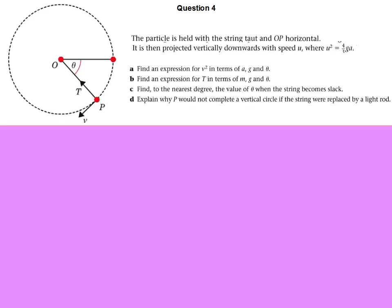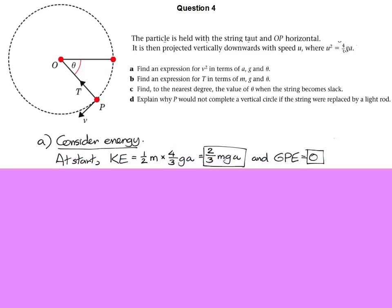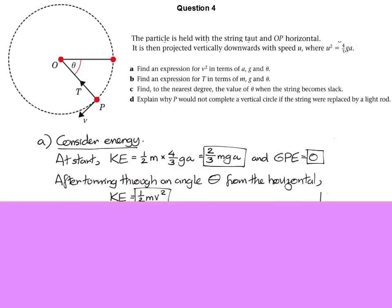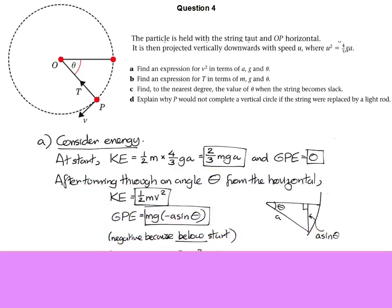The energy at the start when the angle is zero is very easy to think about. The kinetic energy is a half mv squared, and they've given us the initial speed. And I've chosen to make the zero point for gravitational potential energy the starting point. So that's the energy in the system when it's started. After it's turned through a certain angle, we've got a kinetic energy of a half mv squared, and we've got a gravitational potential energy, which is mgh. Now the h is a sine theta.